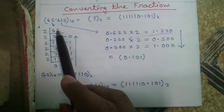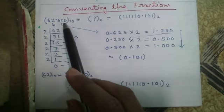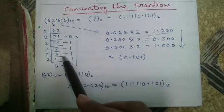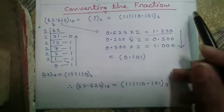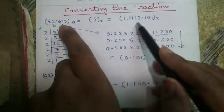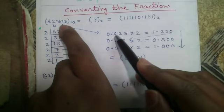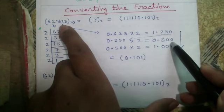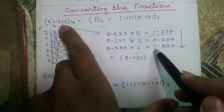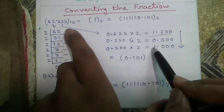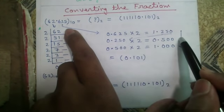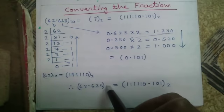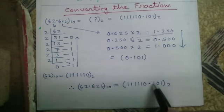Now converting fractions. We will do conversions using fractions also. For 62.65 in decimal, what is the binary equivalent? For 62, do the integer conversion as usual. For the fraction 0.65: multiply the fraction part by the destination base 2. So 0.65×2 = 1.25 — take fraction 0.25; 0.25×2 = 0.50; 0.50×2 = 1.00 — stop as fraction becomes 0. Read the integer parts downward: 1, 0, 1. So 62.65 decimal becomes 111110.101 in binary.